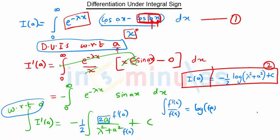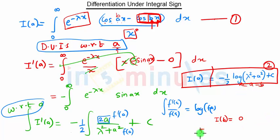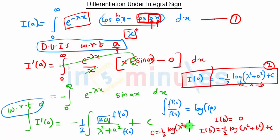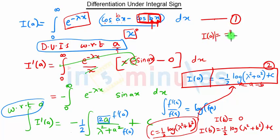To find the constant C, we put a = b in equation 1. When a = b, cos ax − cos bx = 0, so I(b) = 0. Substituting into I(a): 0 = −½ log(λ² + b²) + C, giving C = ½ log(λ² + b²).